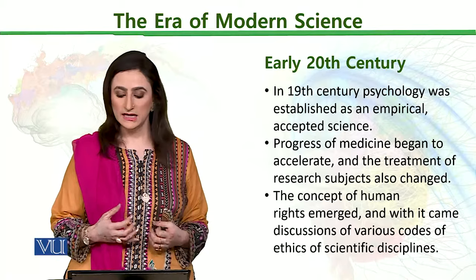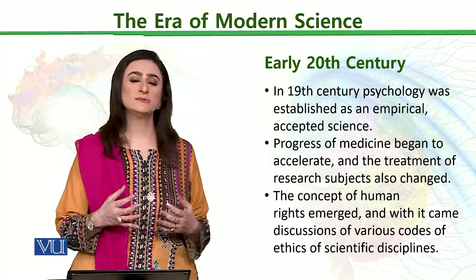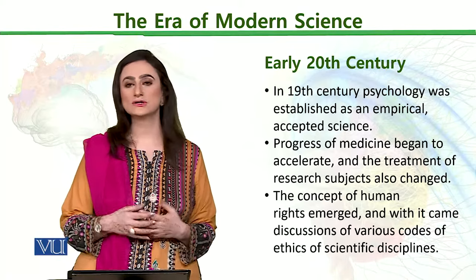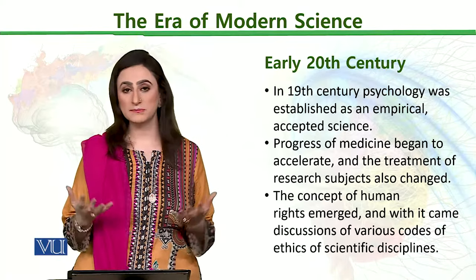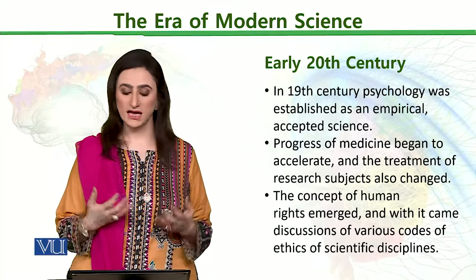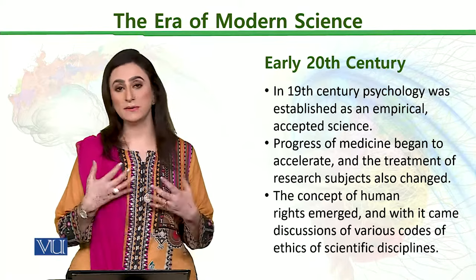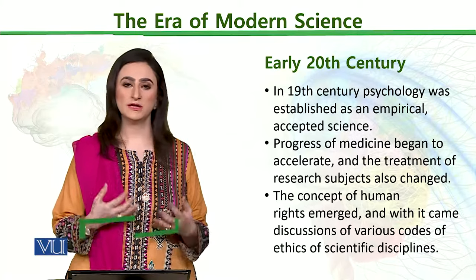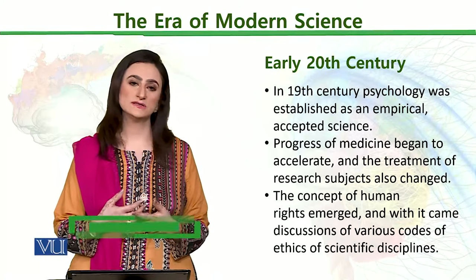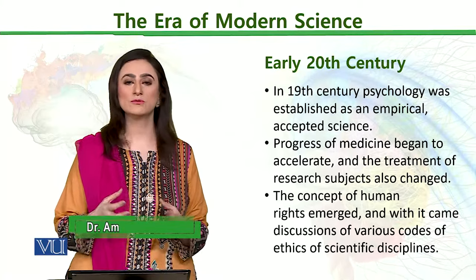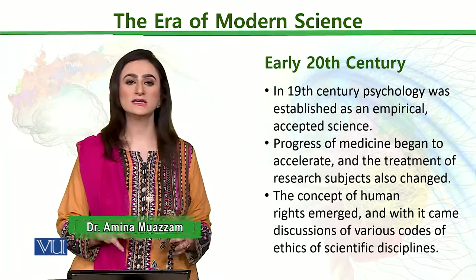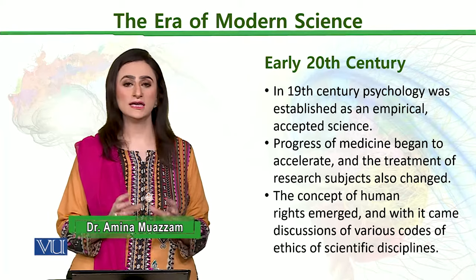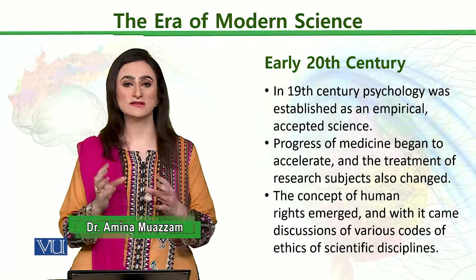In the 19th century, psychology was already being accepted as a science — an empirical one — and the experiments and researches were proven to be a scientific method.